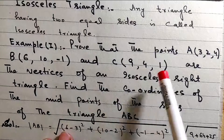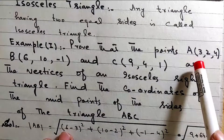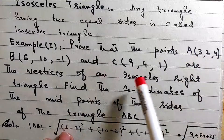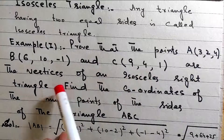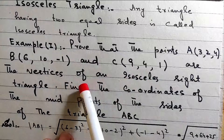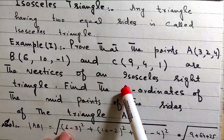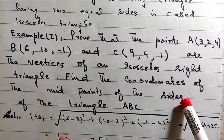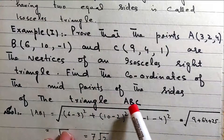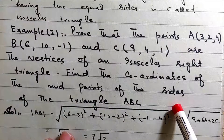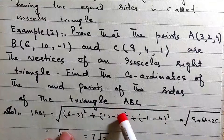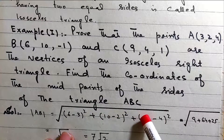Prove that the points A, B, and C are the vertices of an isosceles right triangle. Find the coordinates of the midpoint of the sides of the triangle ABC.